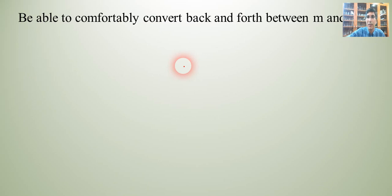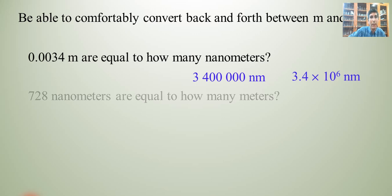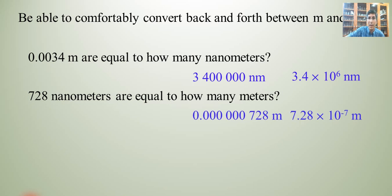Here's one that's a little bit more complex and looks like it's being covered by the camera, but be able to comfortably convert back and forth between meters and nanometers is what that says. NM is for nanometers. So if we have 0.0034 meters, I expect you to know that there are a billion nanometers in a meter. And so you need to be able to multiply the 0.0034 times 10 to the ninth. You can do it on your calculator. You can do it in your head, however you want to, but it's 3,400,000 nanometers, or you just put it in the scientific notation, you know, make that a little simpler to write. 728 nanometers. Okay, once again, divide it by a billion to get the meter. So it's going to be a very small number. So, you know, that many meters or 7.28 times 10 to the minus seventh meters, excuse me.